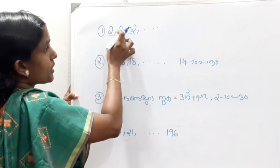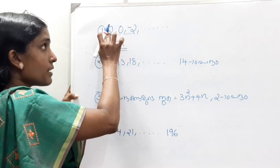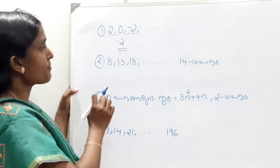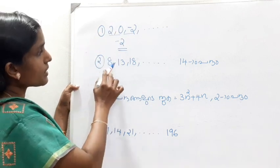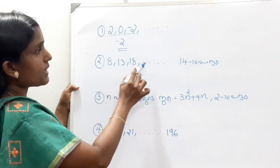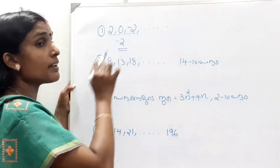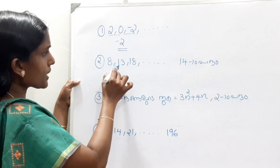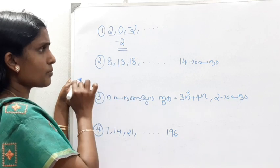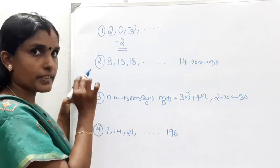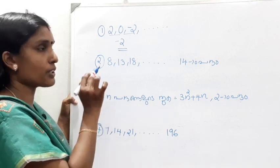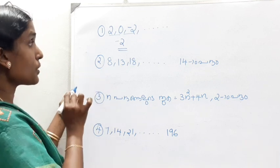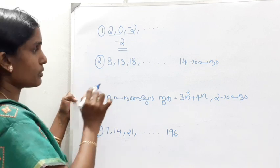Okay, two points of view, it comes to 10. 8, 13, 18 etc. — this is 14 and 10. In the third episode, we will learn the equation. Then we will learn the first degree equation and how to do it.